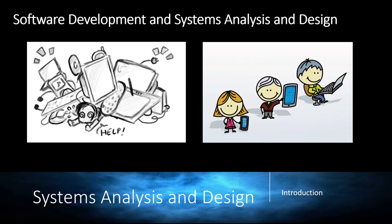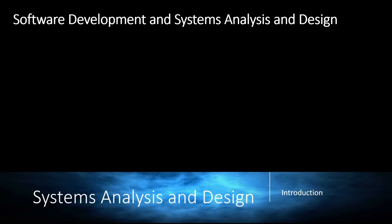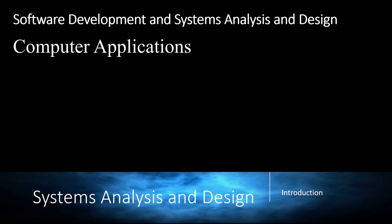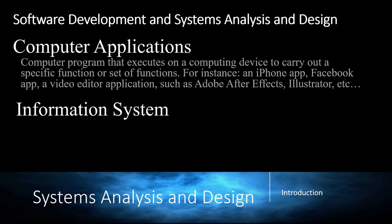We're going to talk about that, but first we need to make some definitions. We're going to analyze what's the difference between computer applications and information systems. A computer application is a software — a piece of software that can be used on a mobile, on an iPhone. It's usually known as an app. Video editing software such as Adobe After Effects or Illustrator are some examples of computer applications.